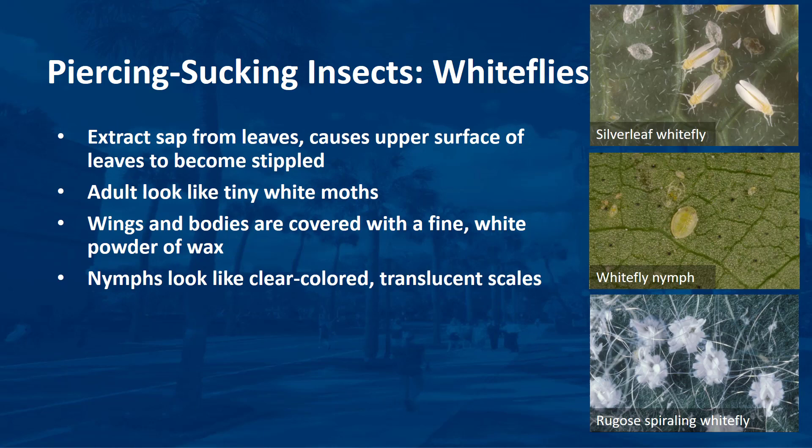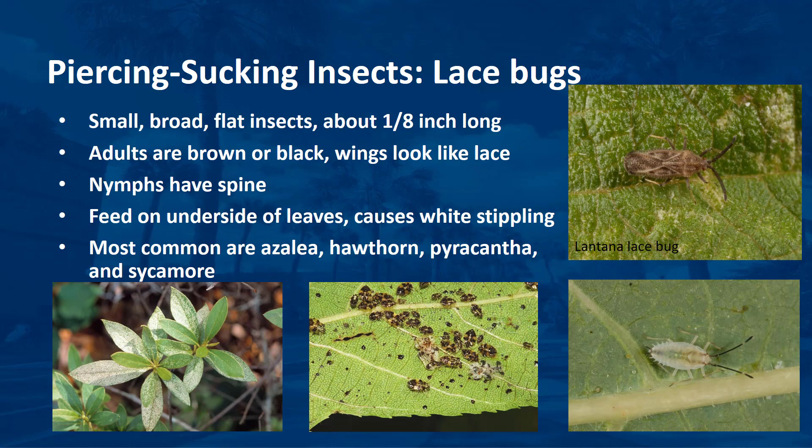Whiteflies are common pests of ornamental plants. These insects extract sap from leaves, causing the upper surface of leaves to become stippled. Adult whiteflies look like tiny white moths. Their four wings and bodies are covered with an even, fine, white powder of wax. Adults are 1/16 to 1/8 inch long. Whitefly nymphs look like clear-colored, translucent scales. The silverleaf whitefly is the most damaging of these insects in Florida. Whiteflies can carry many viruses that cause disease. Since its first report from Miami-Dade County in 2009, the rugose spiraling whitefly has become an escalating problem for homeowners, landscapers, businesses, and government officials throughout the southern coastal counties of Florida.